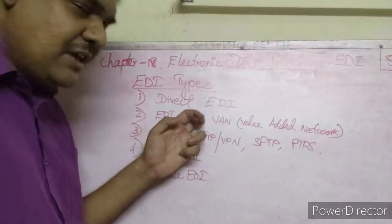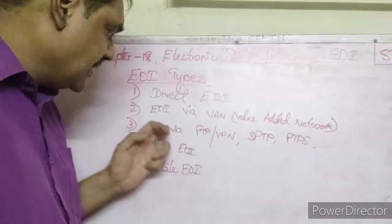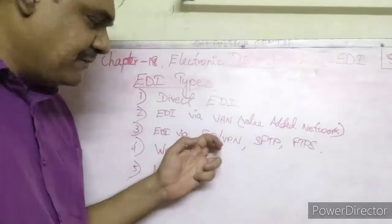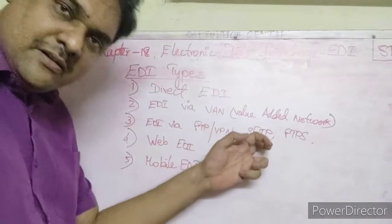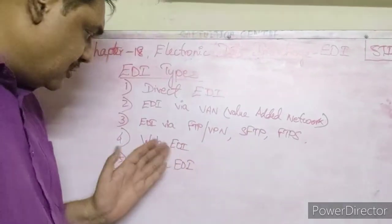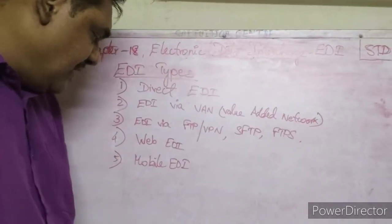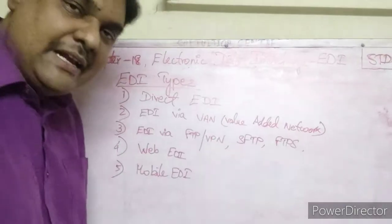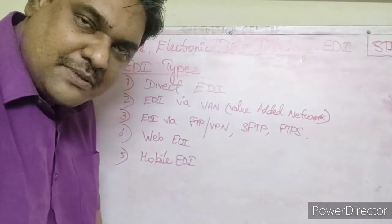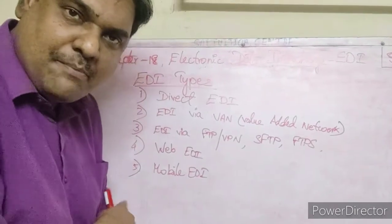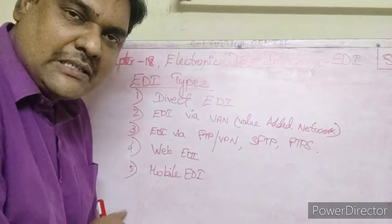EDI is of various types: Direct EDI, EDI via VAN, EDI via FTP, VPN, Web EDI, and Mobile EDI. These five types are important for two marks or three marks questions.